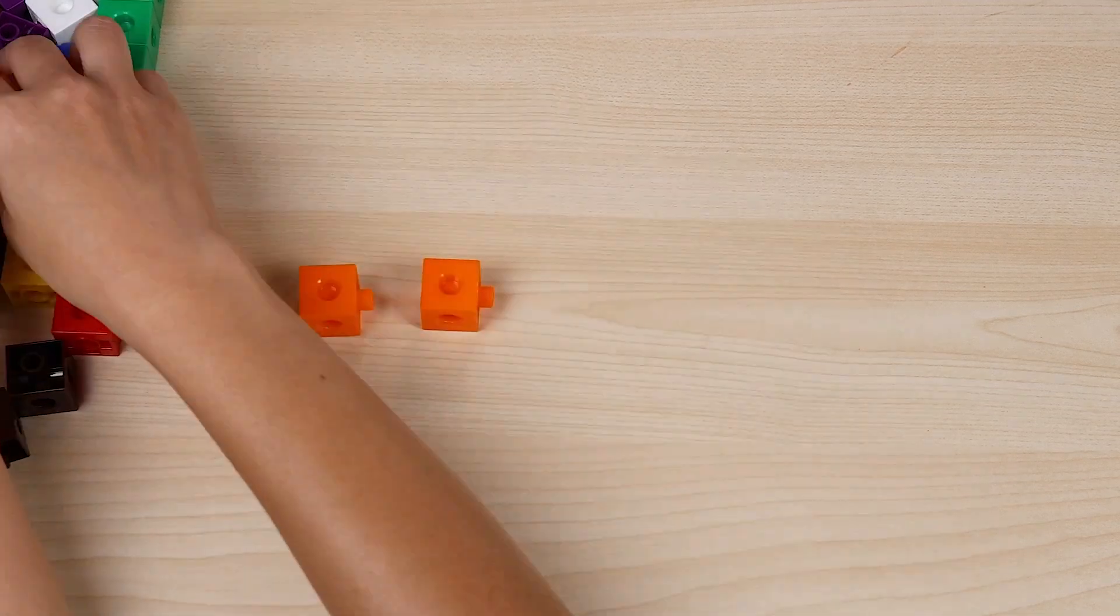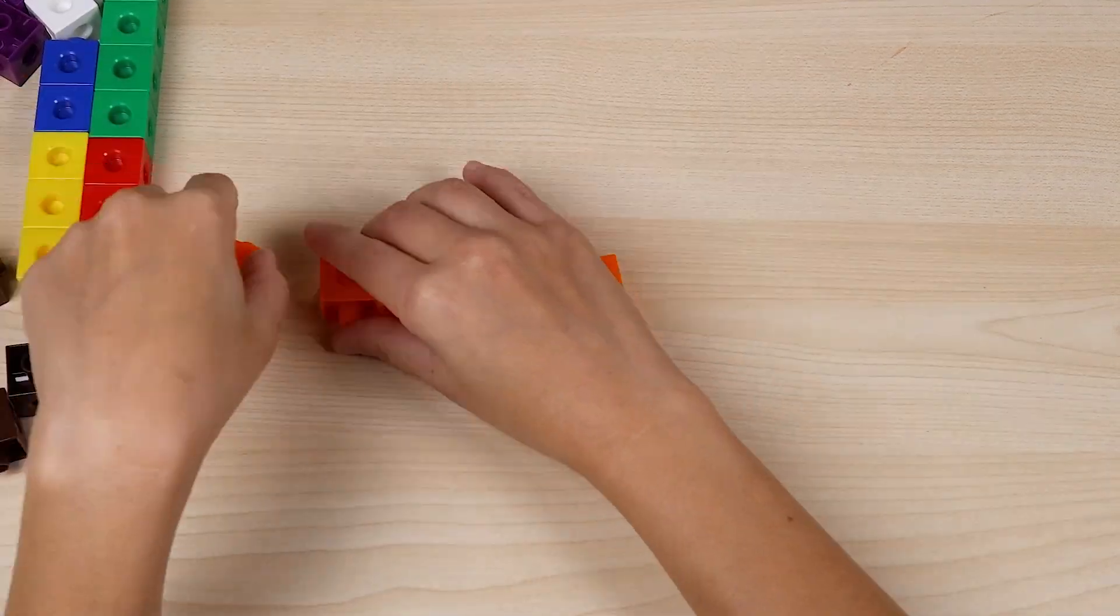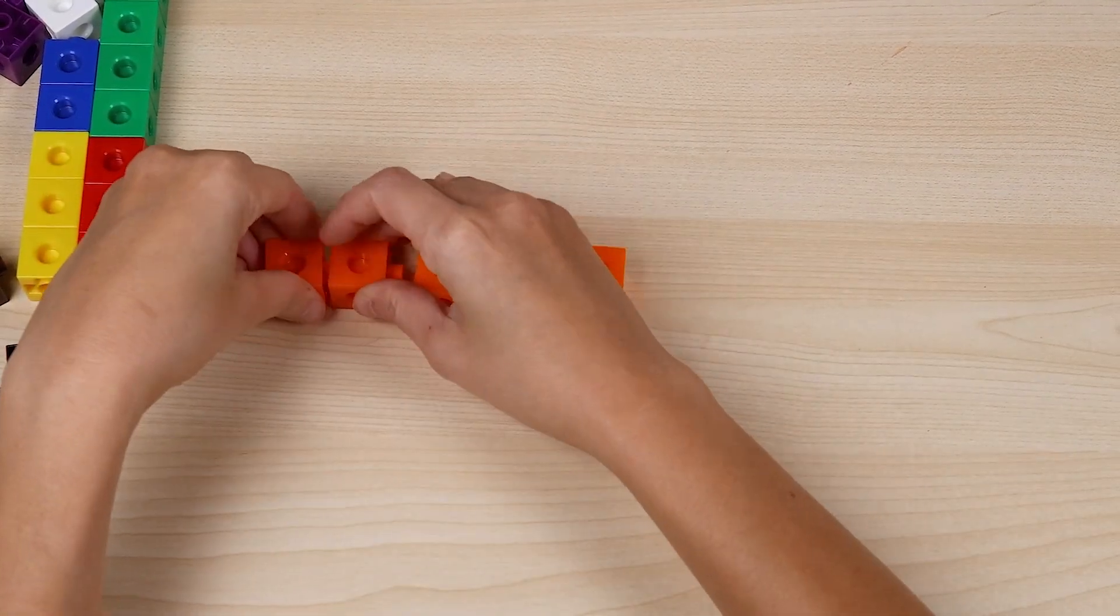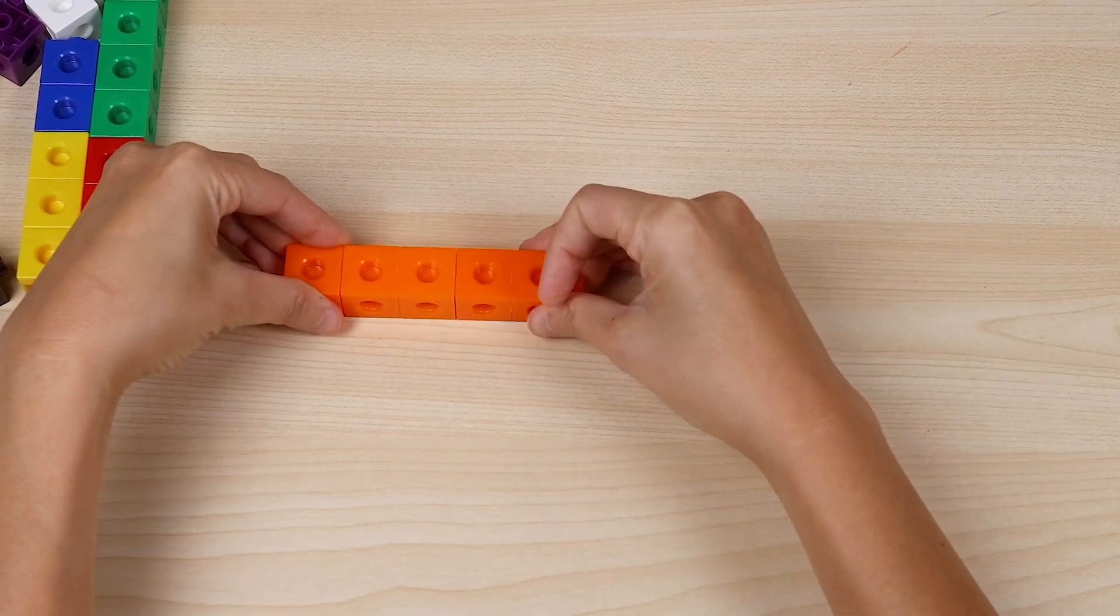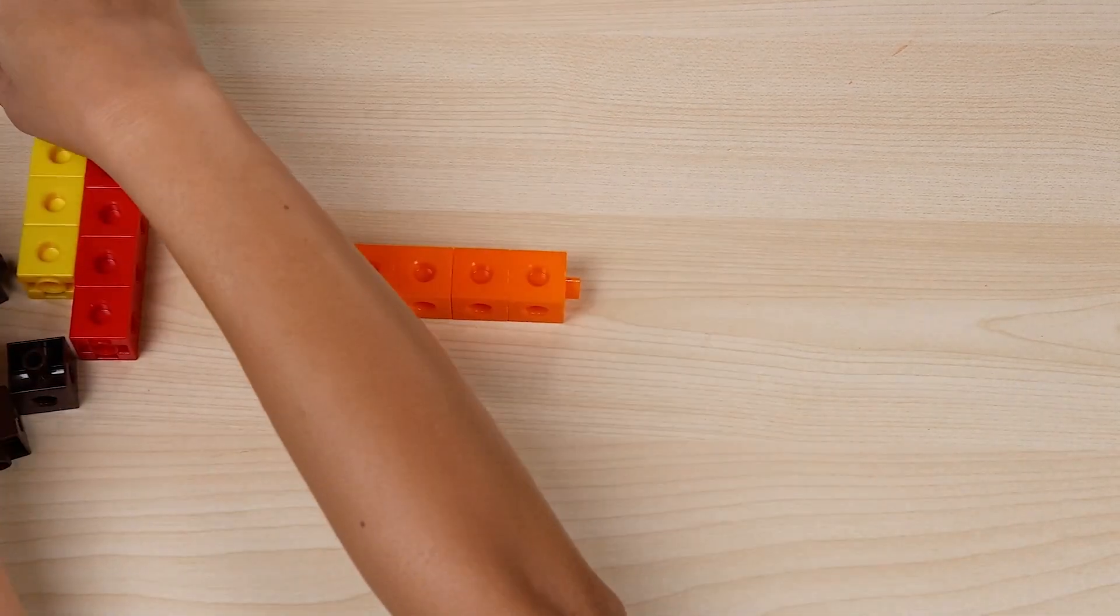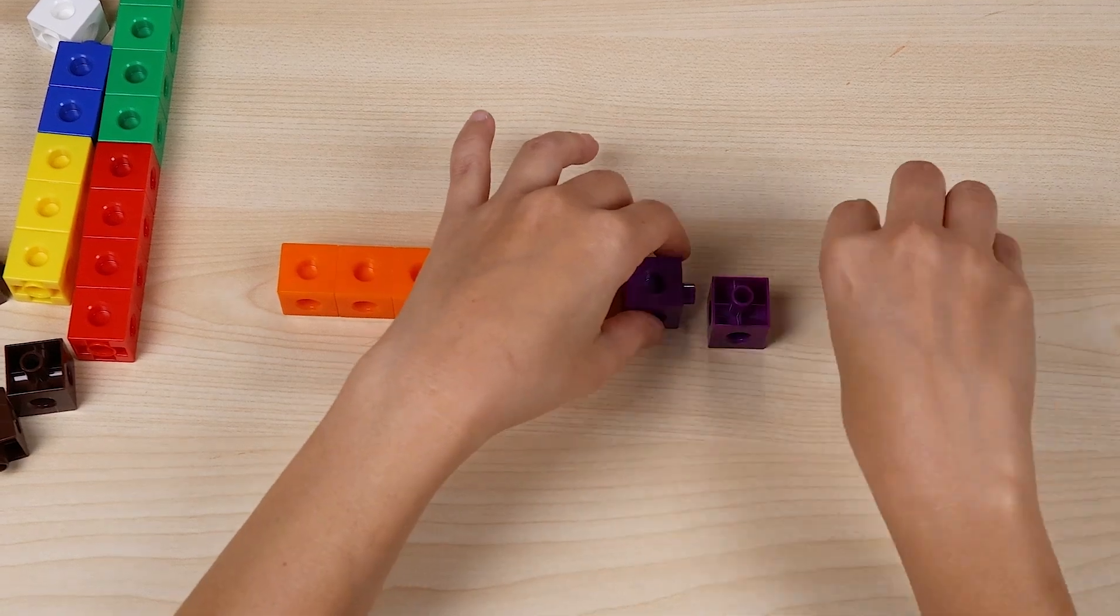Next, let's start with five orange cubes. And we're going to add three purple cubes.